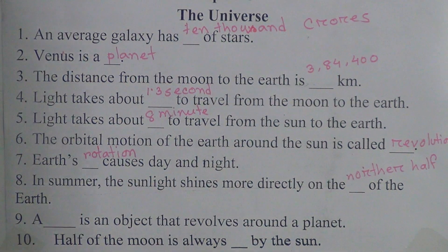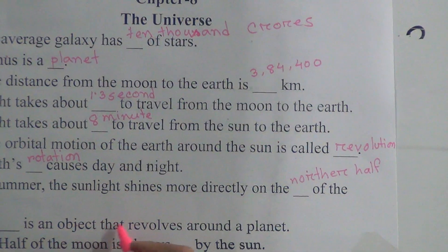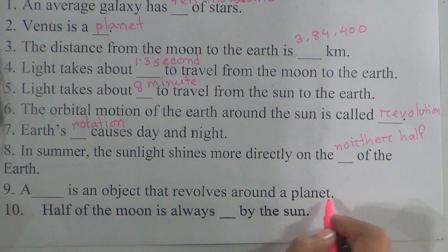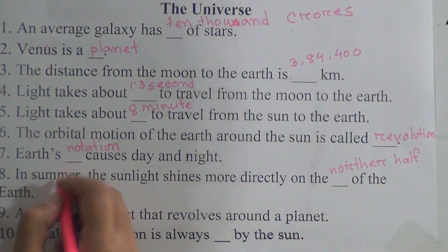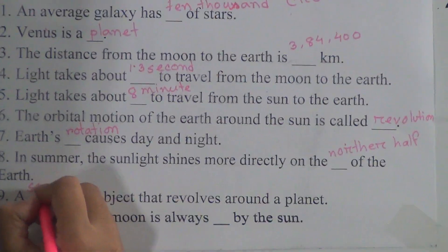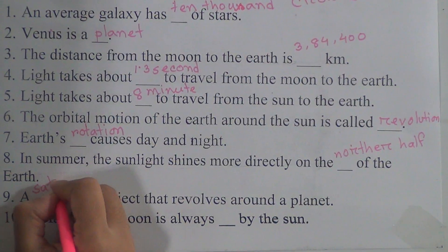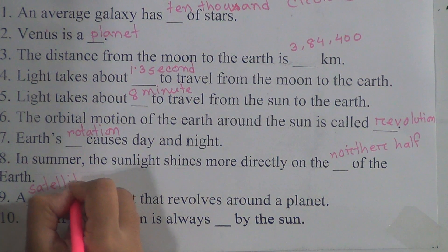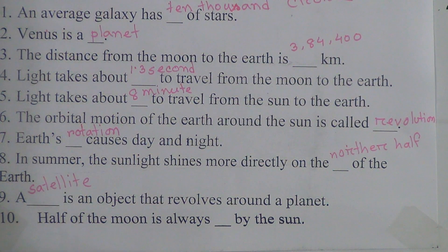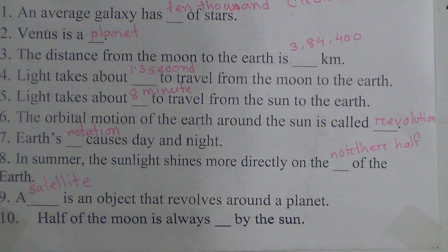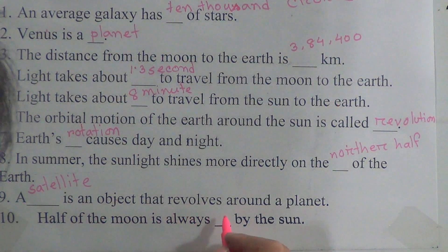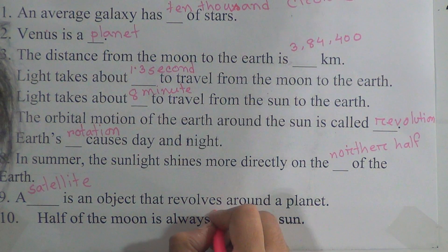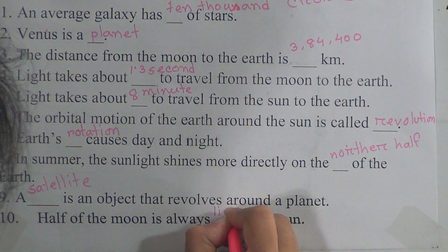Number nine: a satellite is an object that revolves around a planet. Number ten: half of the moon is always lighted by the sun.